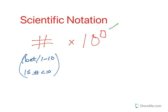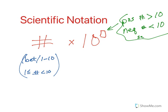Now, this exponent is going to be positive if we have a number larger than 10, and it's going to be negative if we have a number that is less than 10. This, talking about in standard form or decimal form.